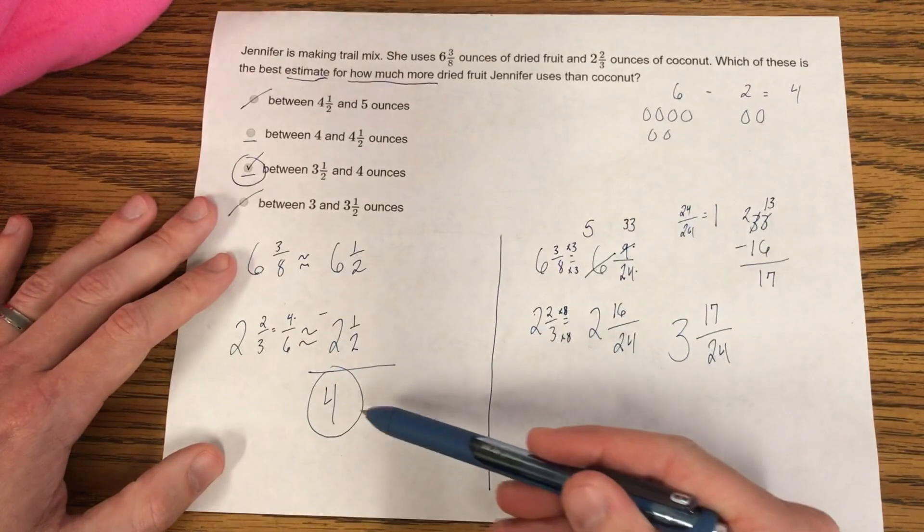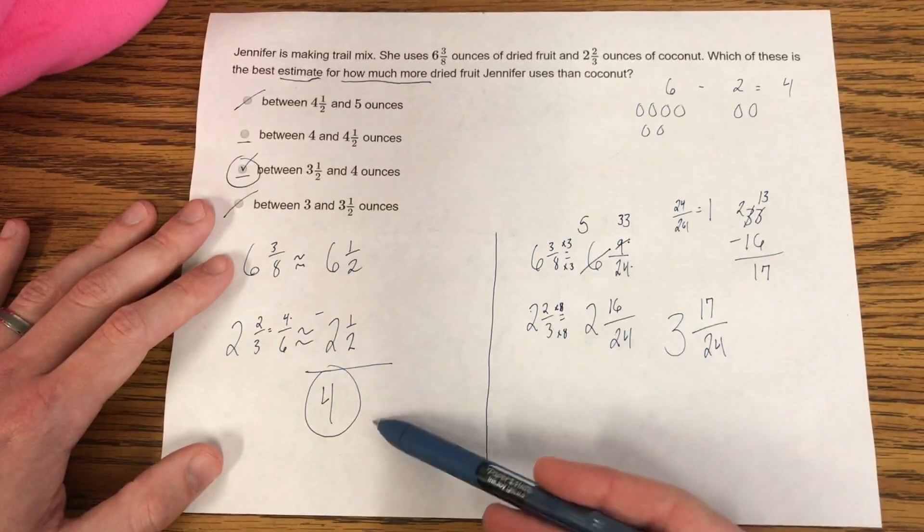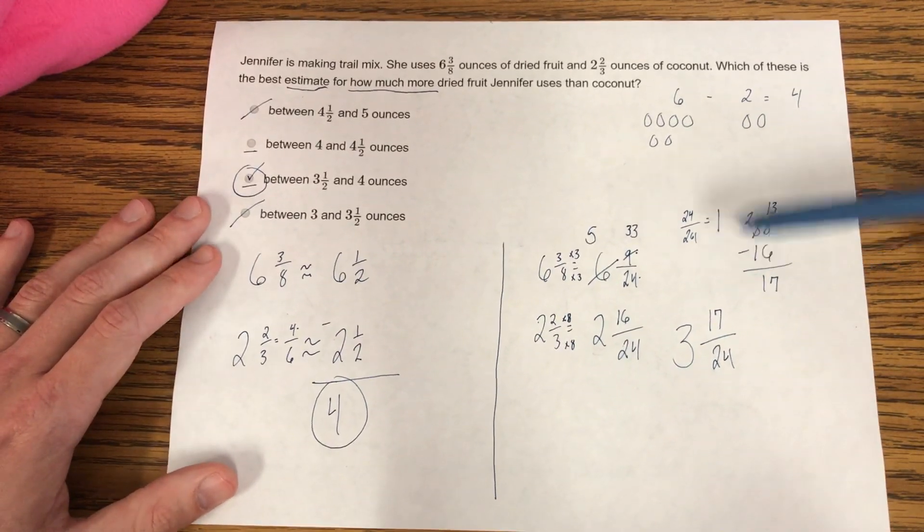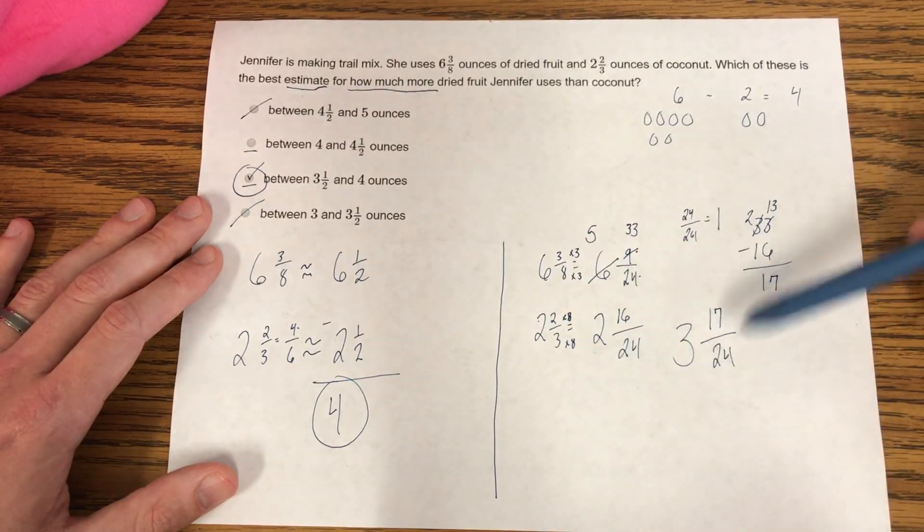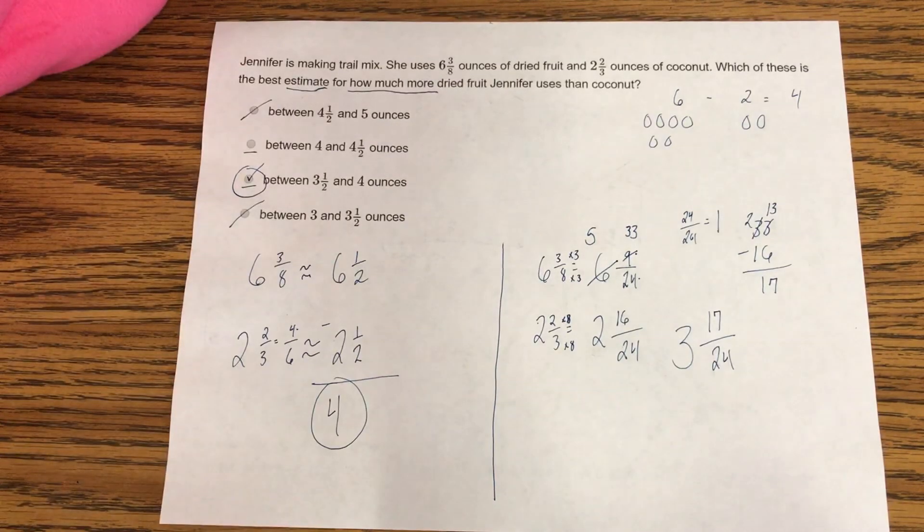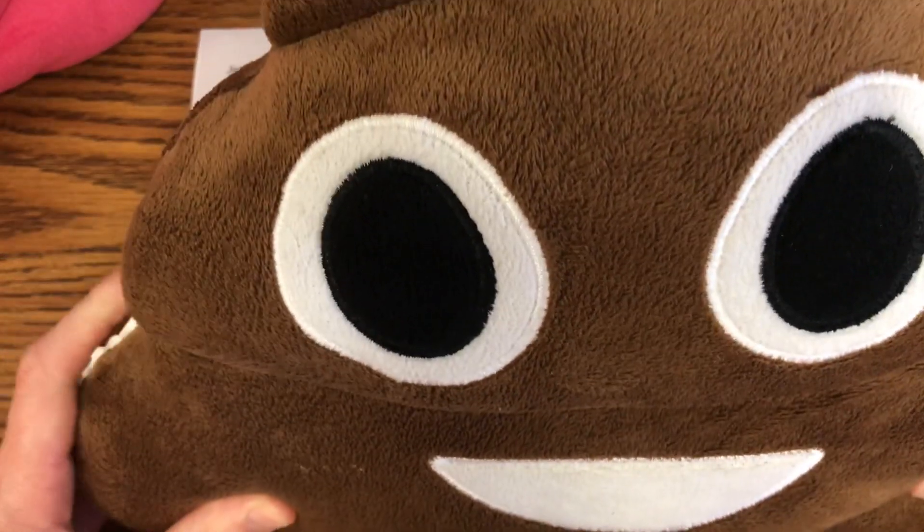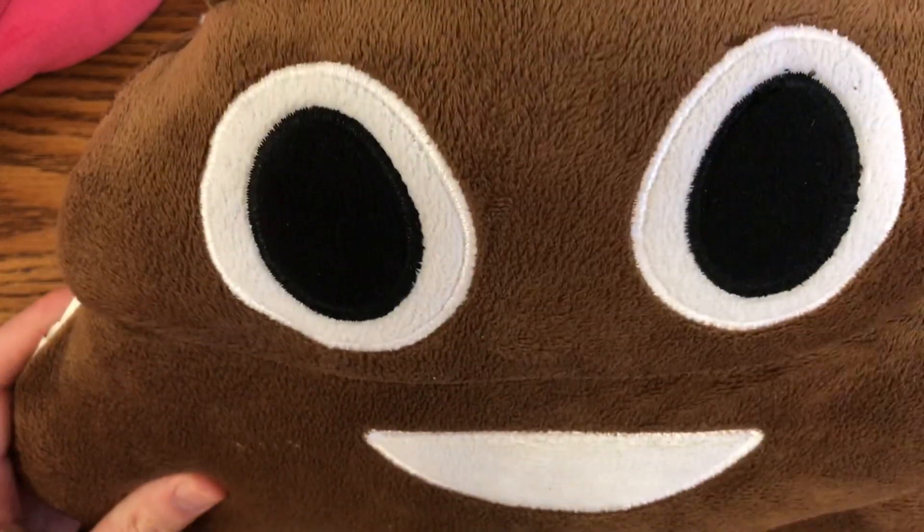I know this mastery was a tough one, but use your skill of adding and subtracting fractions. Find those common denominators. Look for what makes sense, and just show me your best effort. So don't be a poop emoji. You're going to rock this out. Take your time on these questions and show me what you've got.